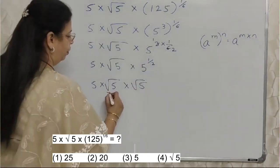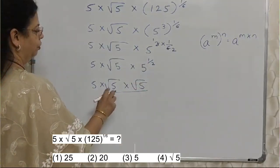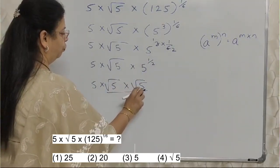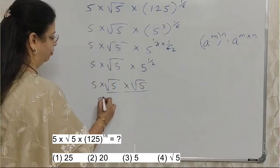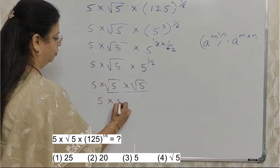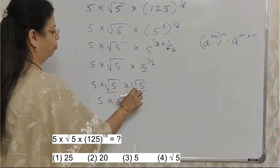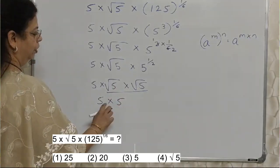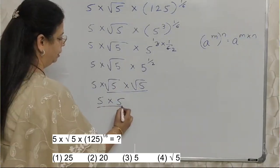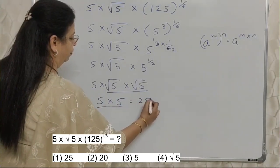Now we will do multiplication here. Root 5 into root 5 we will again get 5. Right? Root 5 into root 5 is 5. Then it is very simple. The answer is 25.